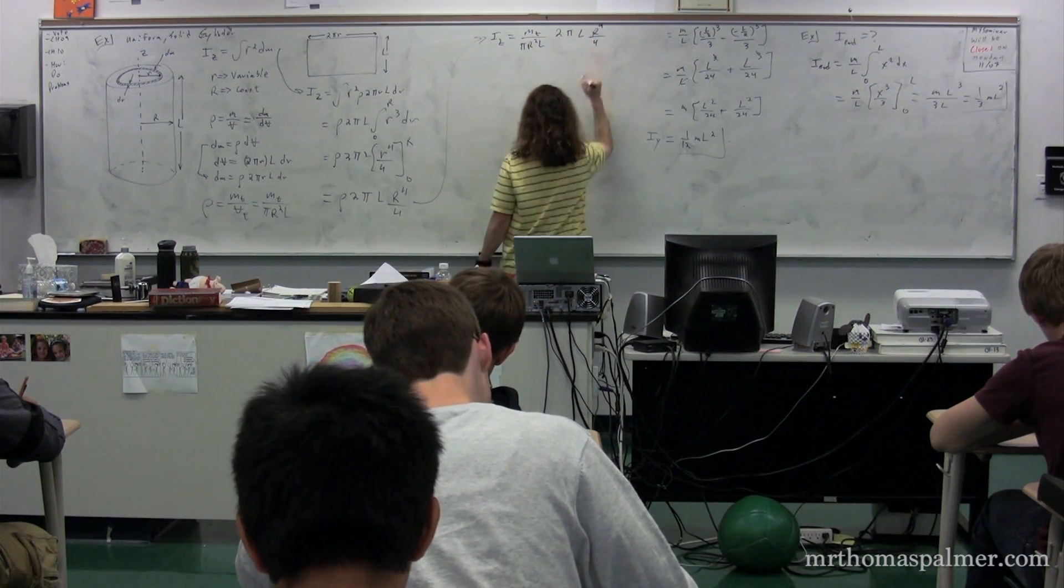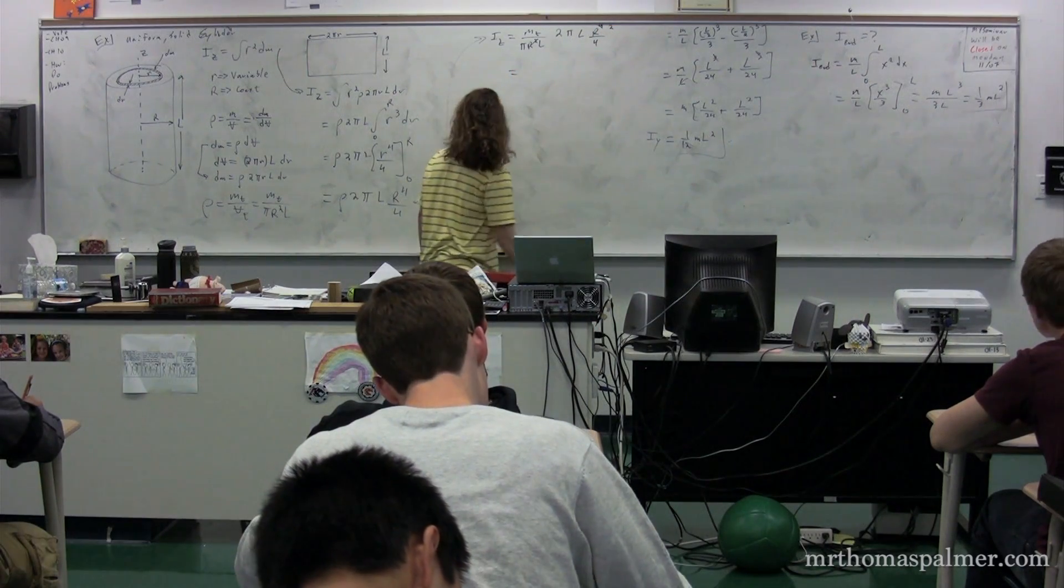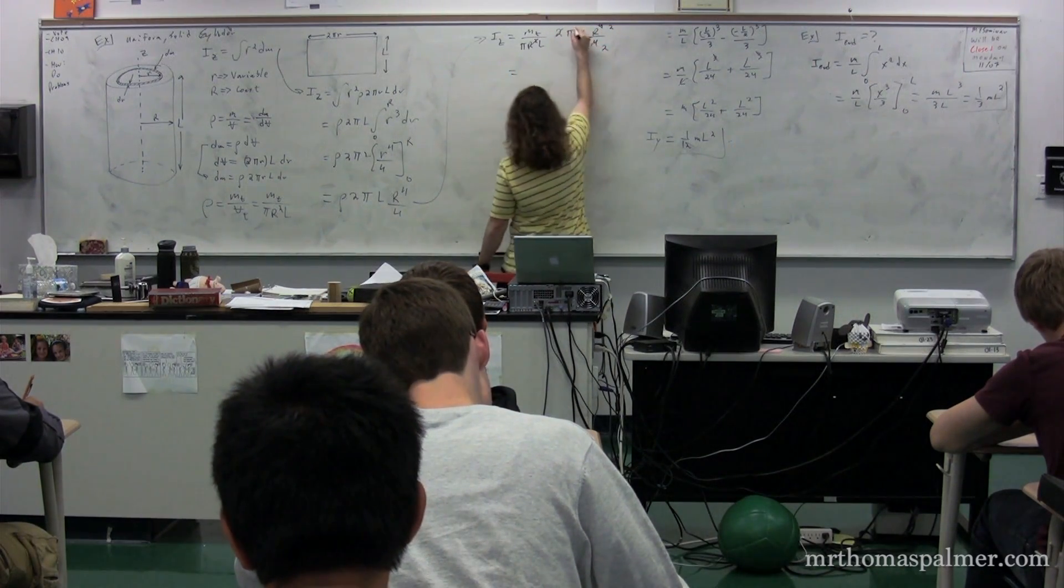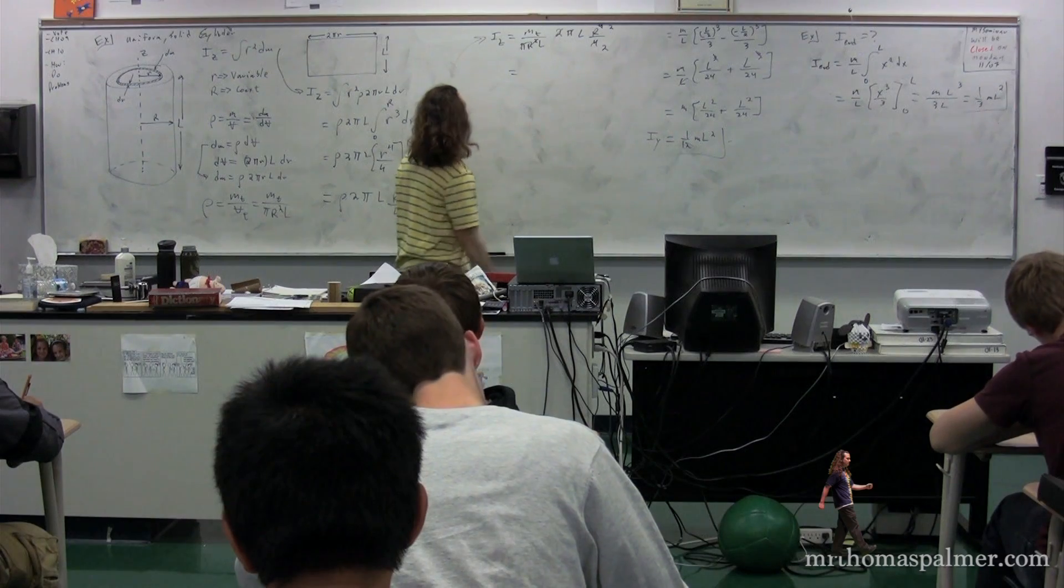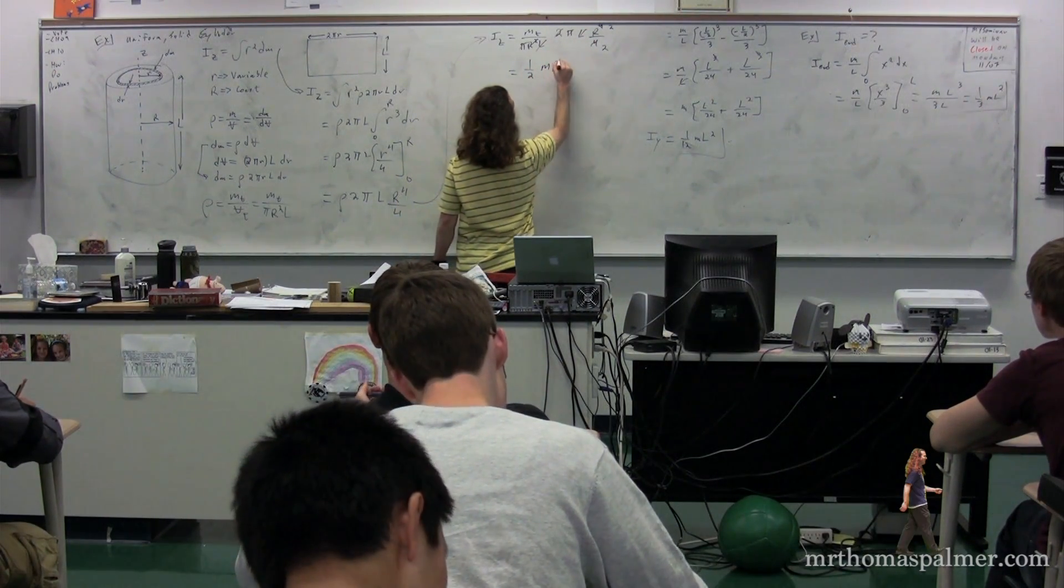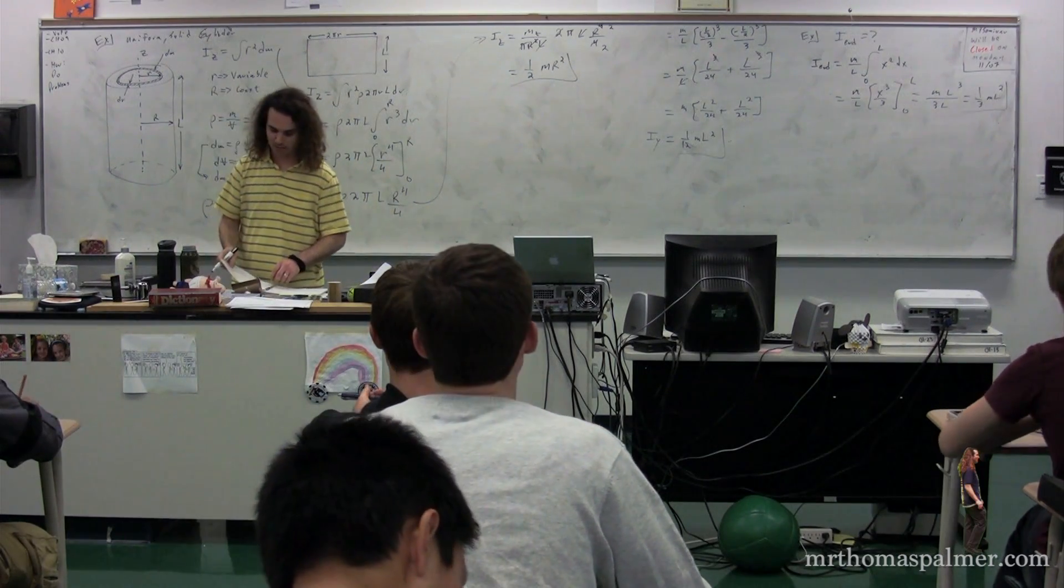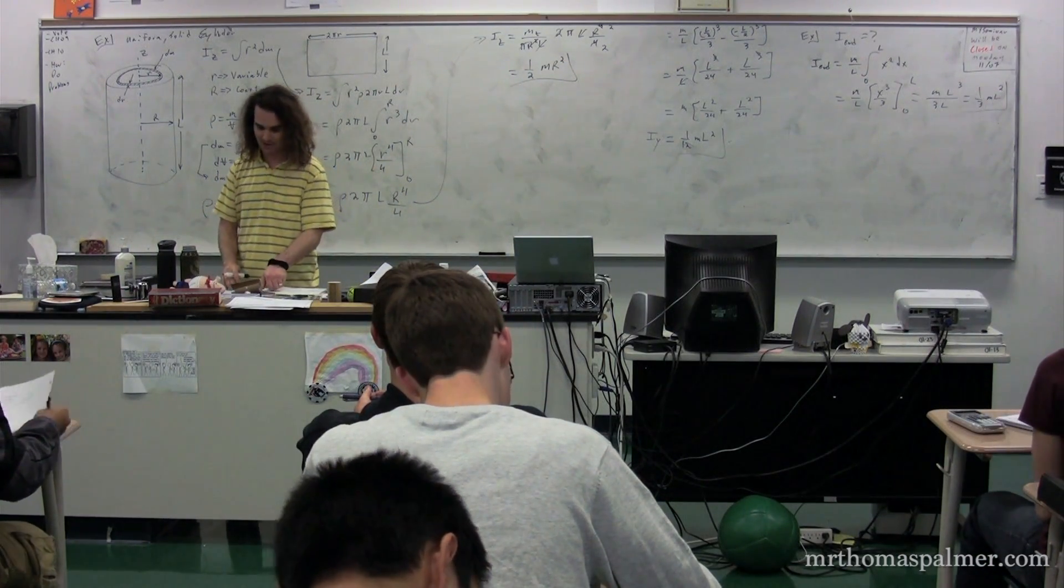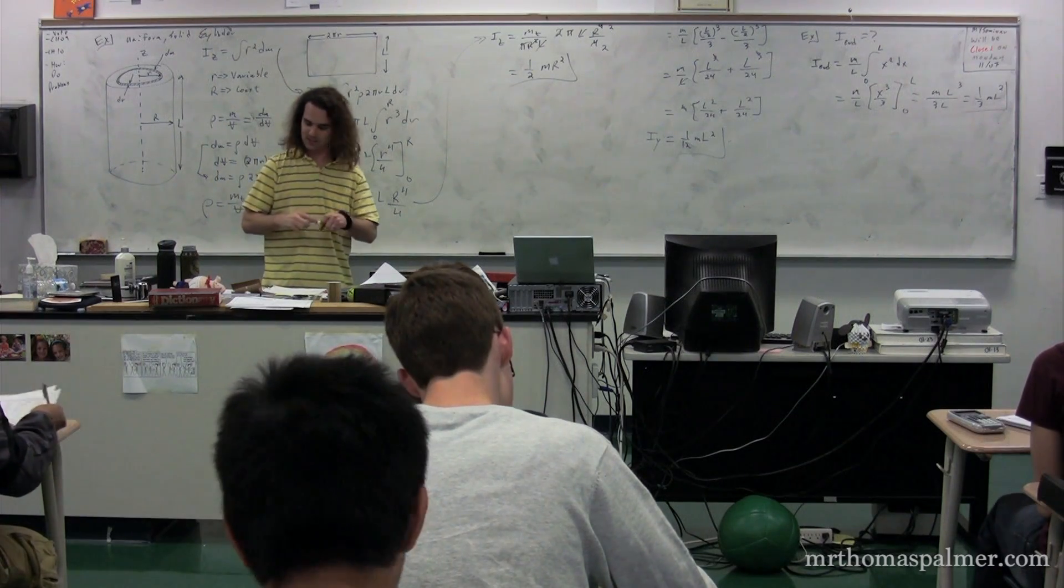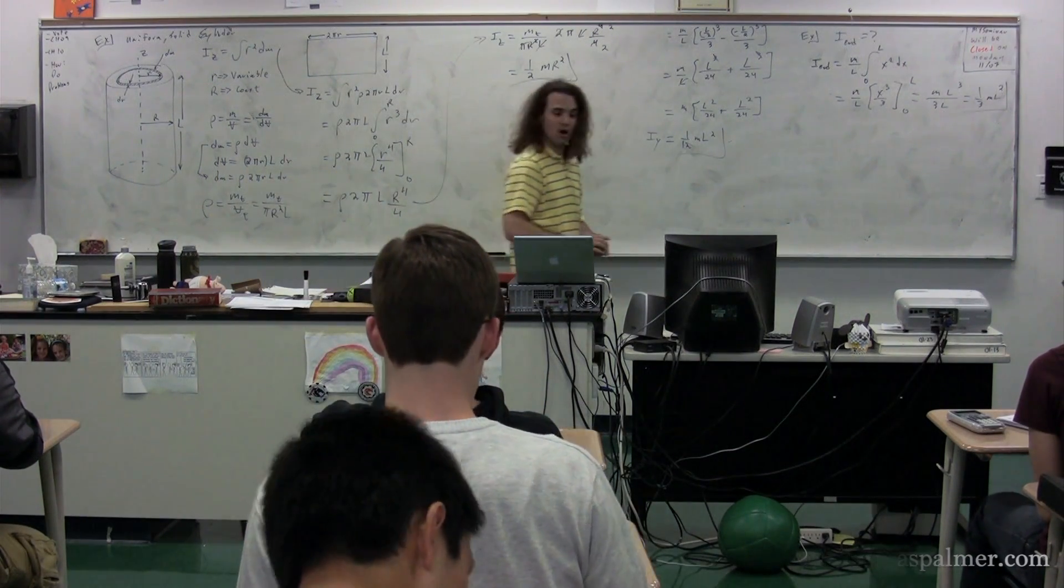R squared cancels out, we end up with 2 here. The total mass, we lose a 2, we get a 2 down here and a pi cancels out. We get an L cancels out as well. We get 1 half times the total mass times the radius squared. The moment of inertia about this object, about its center of mass down the cylindrical axis, the long cylindrical axis, is 1 half times M times R squared.